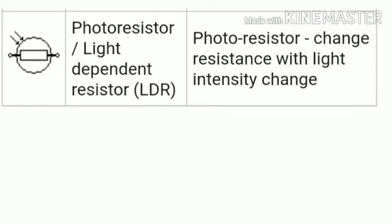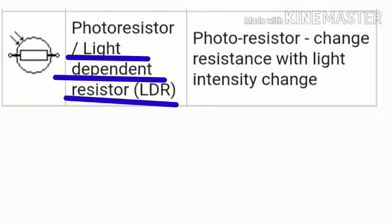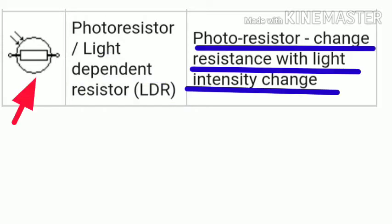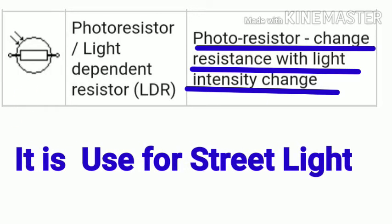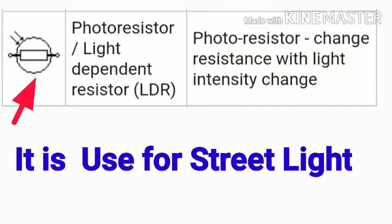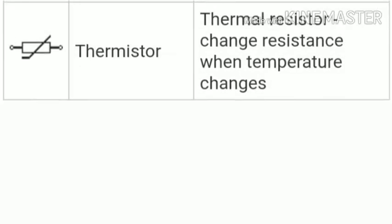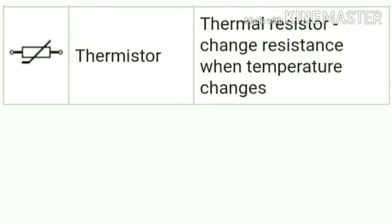The first symbol is the LDR. LDR means Light Dependent Resistor — it is a photo resistor. The photo resistor changes resistance with light intensity. When the light intensity is low, the circuit is on and the LDR is working; when light intensity is high, the circuit is off. It is used for the purpose of street lights.